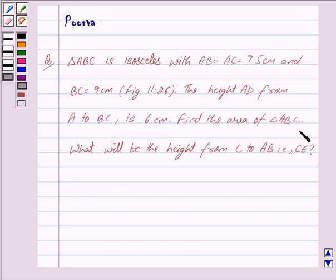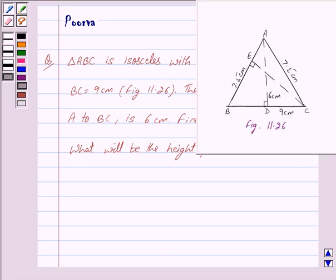The height AD from A to BC is 6 cm. Find the area of triangle ABC. What will be the height from C to AB, that is CE? We are given this figure.